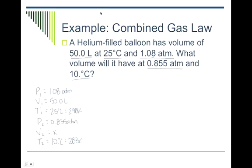So I know I need to rearrange my combined gas law. P1, V1, T2 equals P2, V2, T1. Rearrange it for my second volume. So V2 equals P1, V1, T2 over P2, T1.